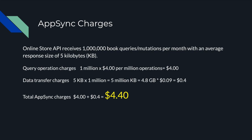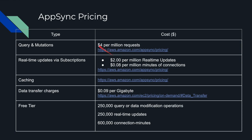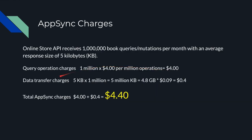Considering these figures, let's calculate the cost for our API. For query and mutation operation charges — whether queries or mutations — for 1 million requests it's going to cost $4, because for 1 million requests you are charged $4.